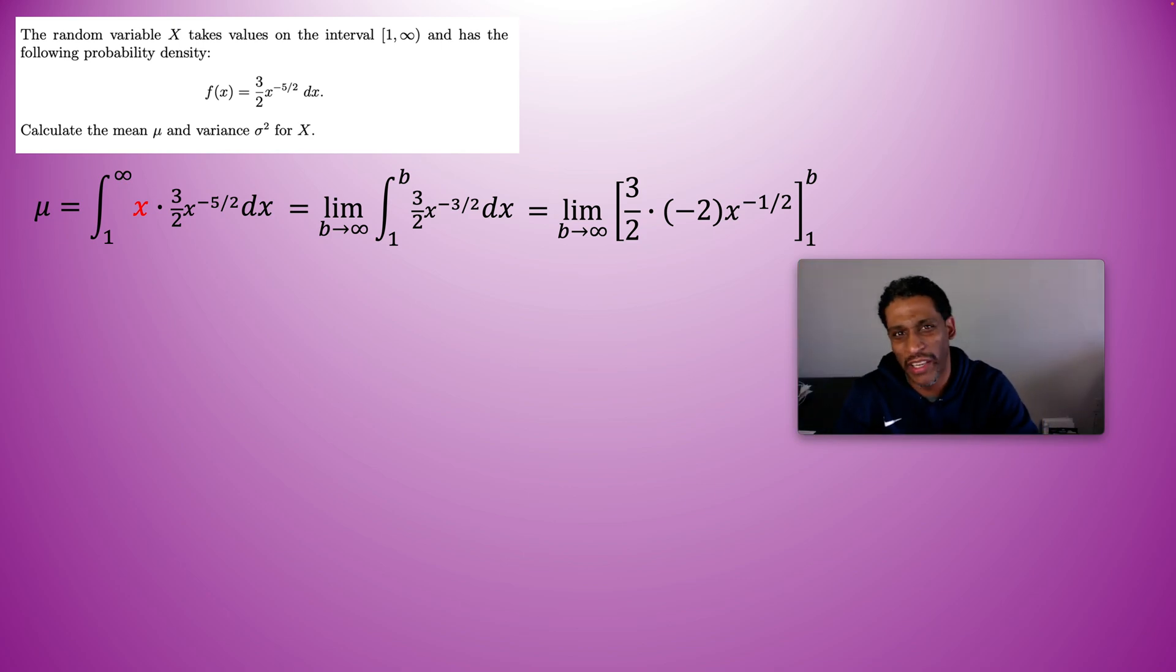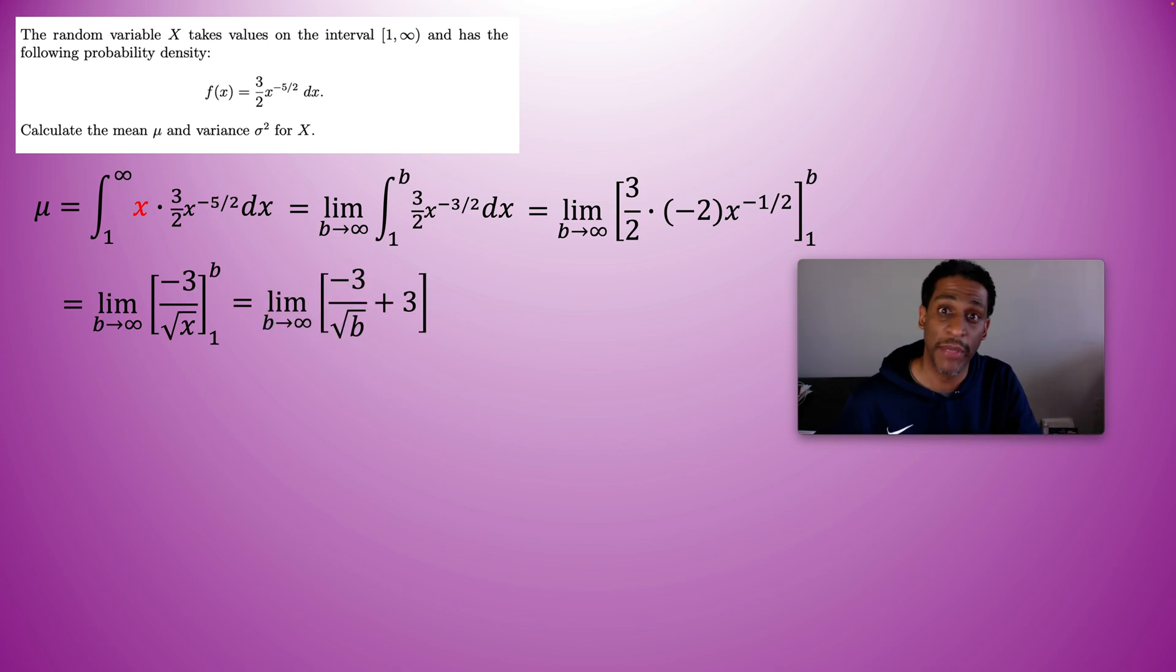We're ready to plug a b in and plug a 1 in, but it'd be better for us if we actually put the negative exponent in the denominator with the positive exponent. So the 2 is going to cancel, we're going to call this negative 3 over rad b. Put the b in, put the 1 in, let the b go off to infinity and negative 3 divided by the square root of a very large number is going to head towards 0 the larger the number gets. So that part is going to go to 0. It's going to converge and the answer is going to be exactly 3.